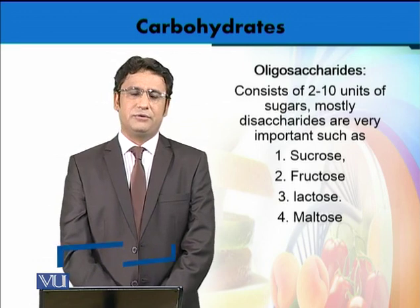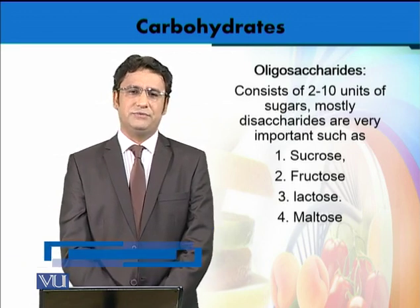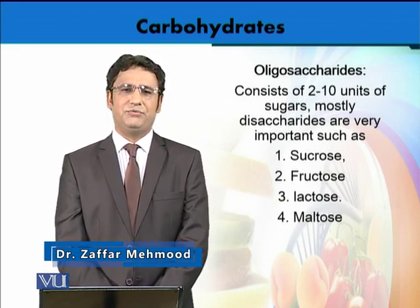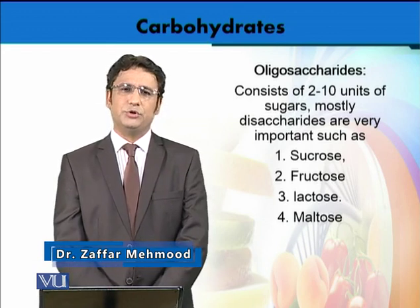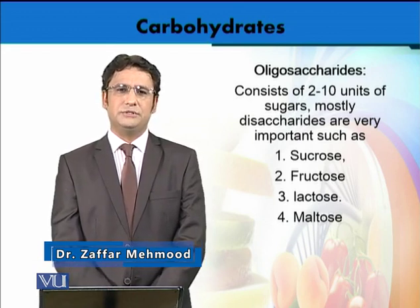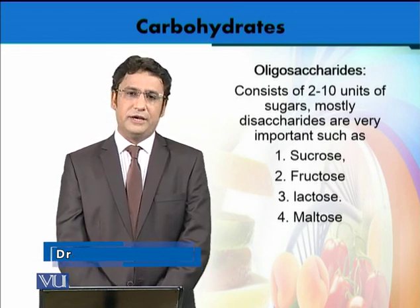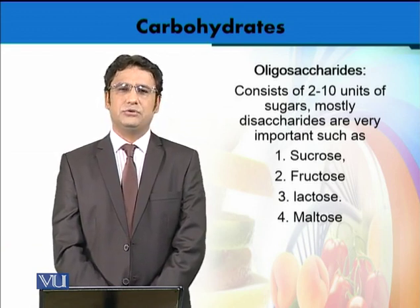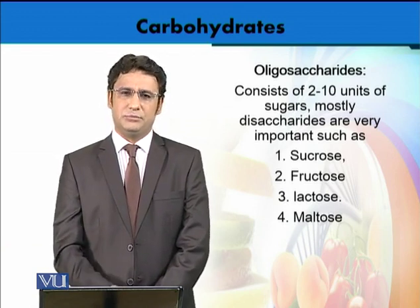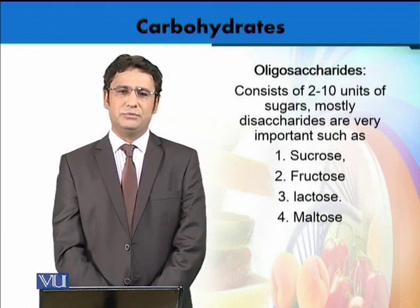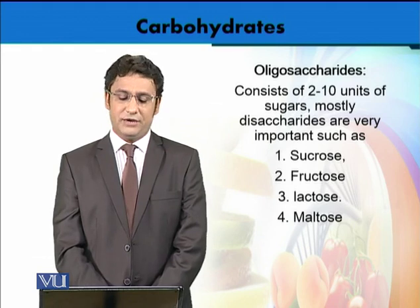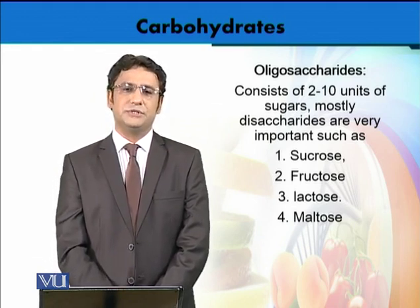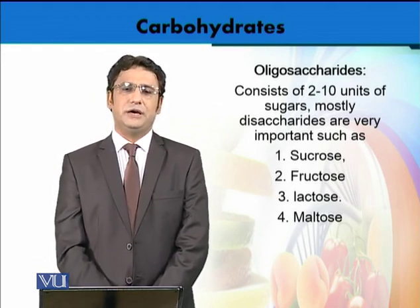Then we have another complex structure called oligosaccharides, in which we would normally have 2 to 10 monosaccharide units joined together. There are important examples in this case, like sucrose which is the table sugar that you normally consume, and fructose, which are the sugars present in honey.